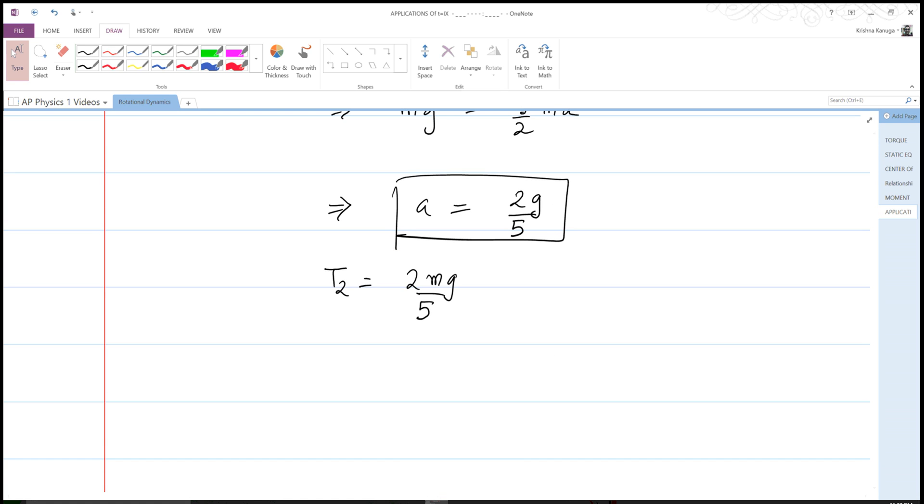And then T1 we know is equal to mg minus ma, so T1 equals mg minus ma, so it is equal to mg minus 2 fifths mg, which is 3 fifths mg.